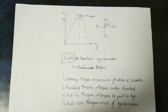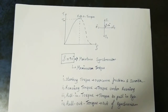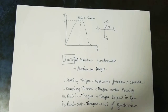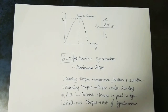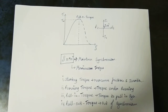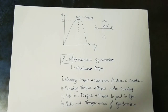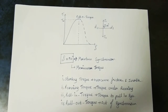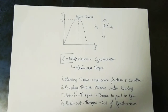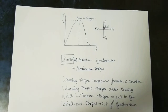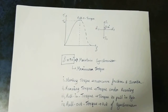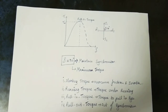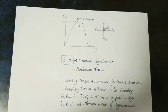Starting torque is used to overcome friction and inertia. Inertia is the capacity of an object to remain at rest — the tendency to stay at rest, as described by Newton's law. Inertia is resistance to motion. When starting torque overcomes inertia, the rotor will rotate. This is starting torque.